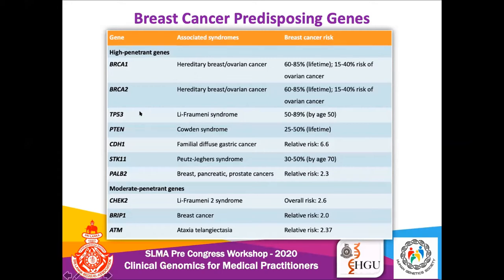Another common gene is TP53, associated with Li-Fraumeni syndrome. Patients can have a variety of tumors including breast cancer, sarcomas, leukemias, adrenal cortical tumors, brain tumors, and so on. It has very high penetrance — almost 90 percent of individuals with pathogenic variants in this gene will develop a tumor in their lifetime.